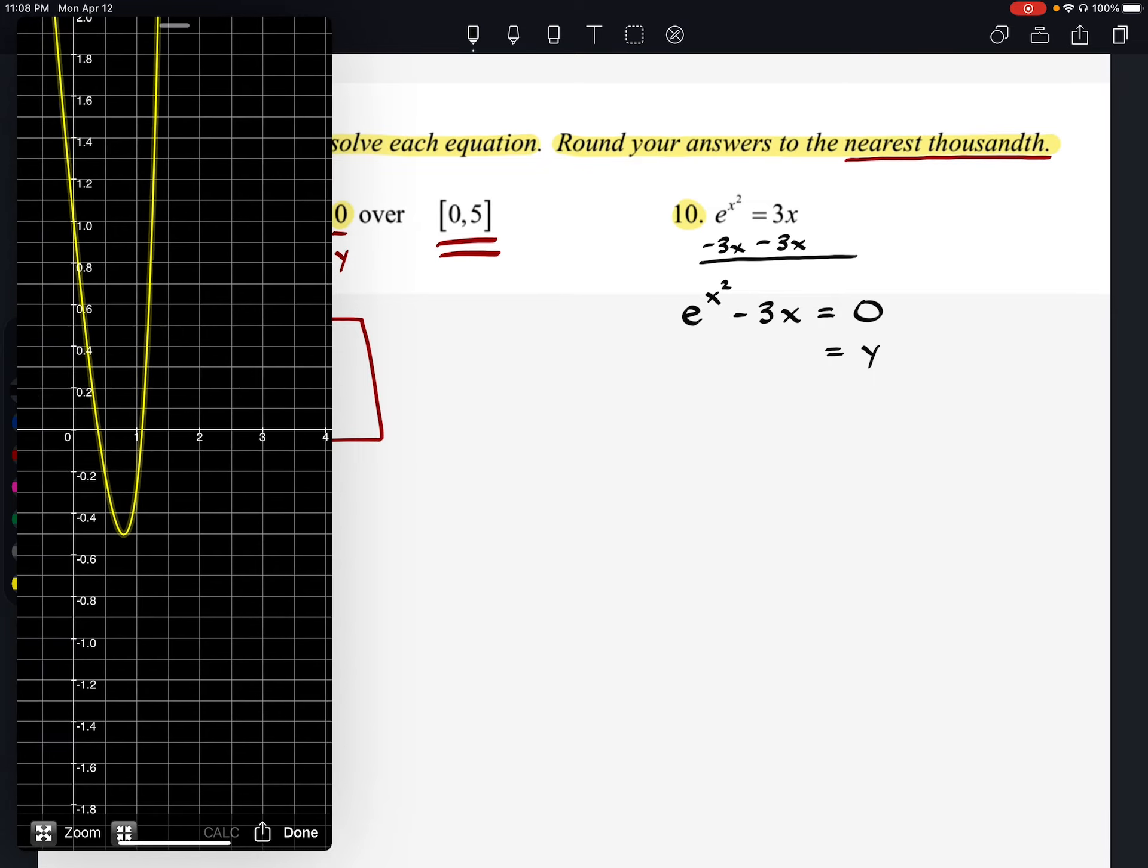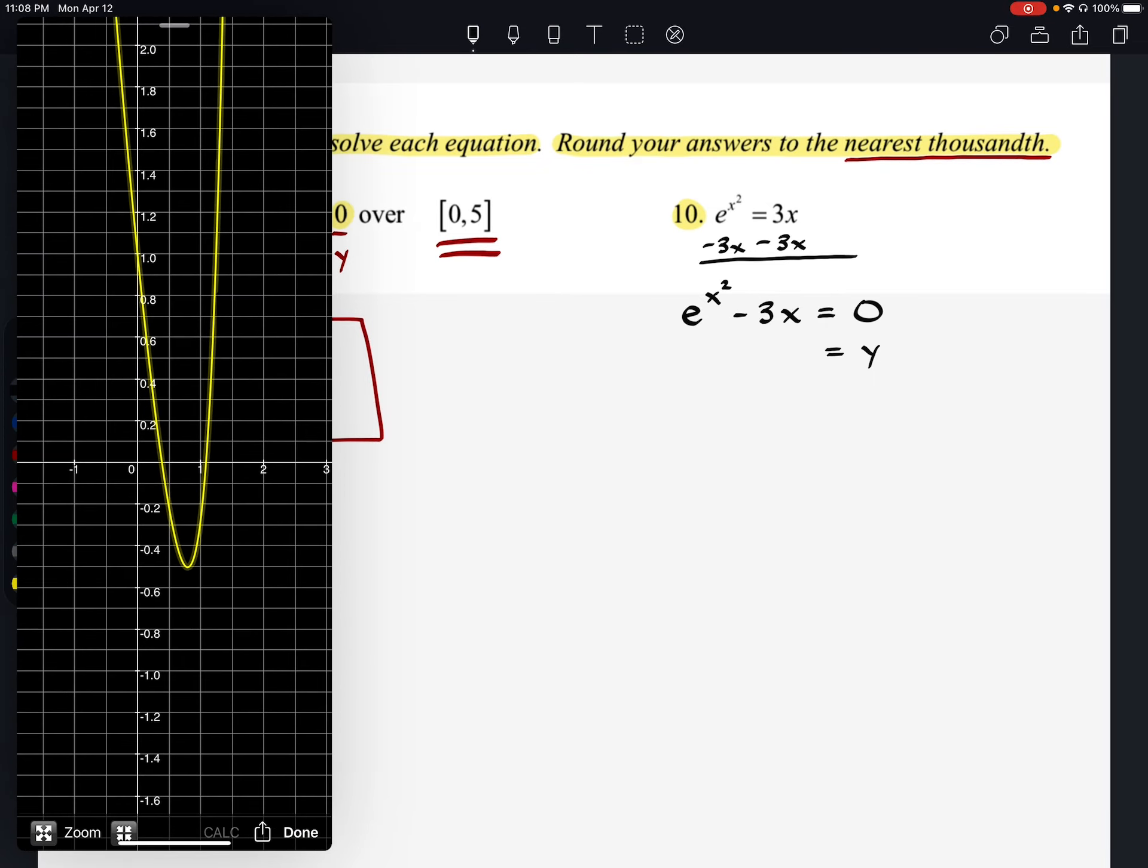All right. So it looks like we can see our answers right here. Let's figure out what they are. The first one looks like we have a 0.3872. So 0.387. And our second answer, 1.087. So X equals 1.087.